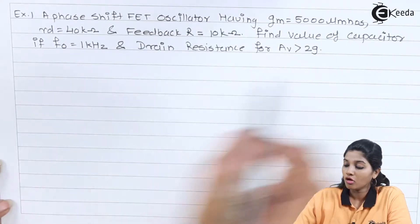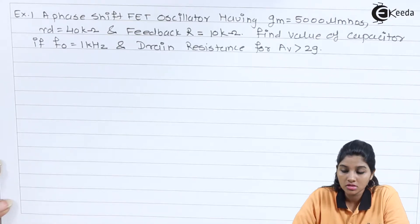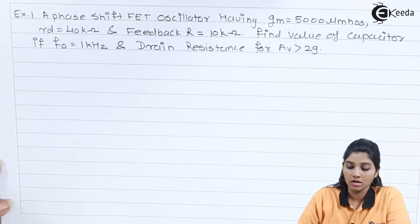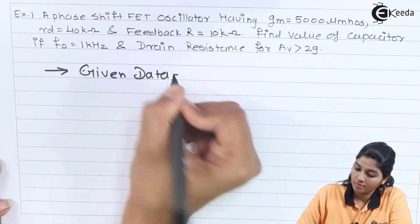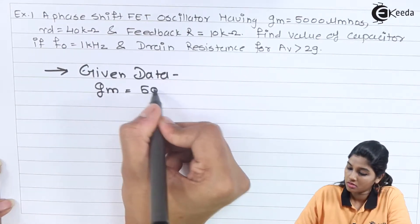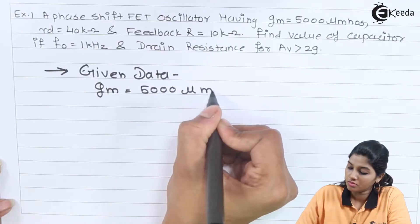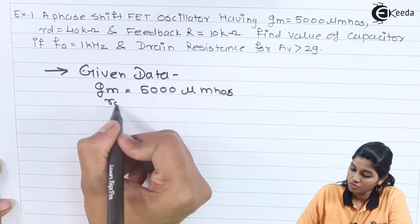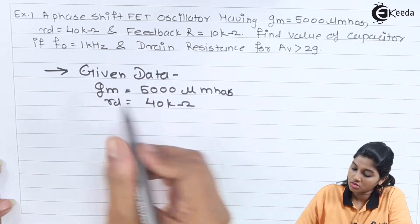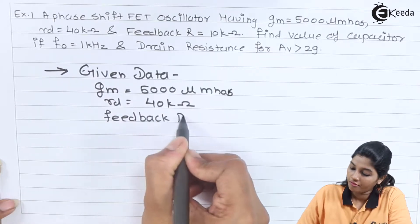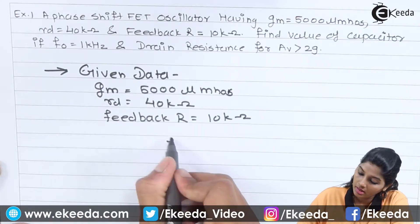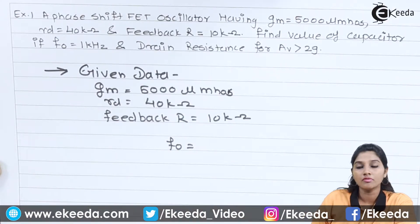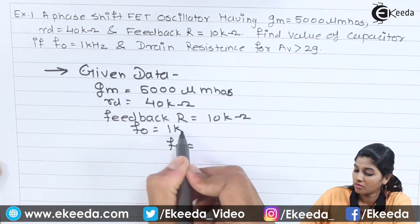So here we need to find out the value of capacitor when value of frequency is given and value of drain resistance, that means capital RD, when gain given as 29. So first, let's write down the given data. GM is 5000 micro, small RD is 40 kilo ohms, feedback resistor is 10 kilo ohms. So first, find out capacitor value by using given value of frequency, F0 given as 1 kilohertz.